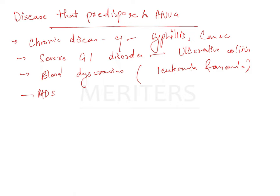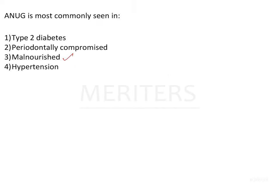In these patients you can see ANUG mostly. AIDS — Acquired Immunodeficiency Syndrome — is also a predisposing factor for ANUG. Additionally, nutritional deficiencies resulting from debilitating systemic disease that impairs immunity are an additional predisposing factor. So malnourished is the correct option here.